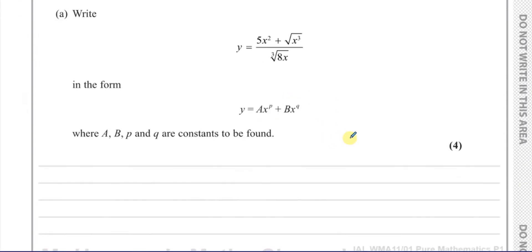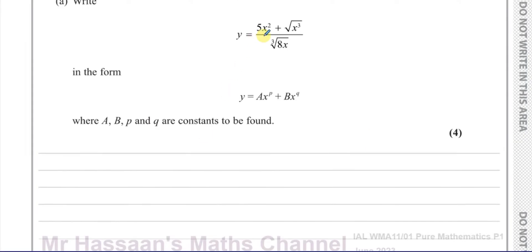What I'm going to do first is rewrite this fraction as two separate terms. So I'll write y equals 5x squared over the cube root of - now you've got to be very careful here, both the x and the 8 are underneath the cube root sign - plus the square root of x cubed over again the cube root of 8x. Now we're going to use some of the laws of indices.